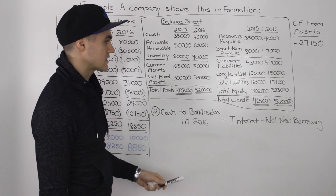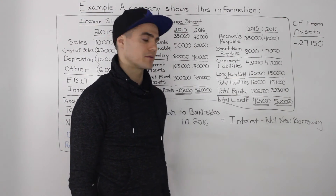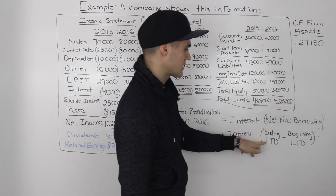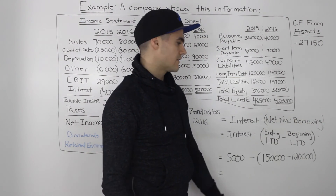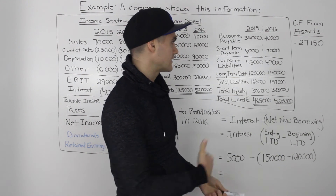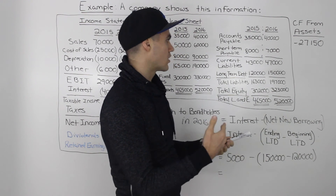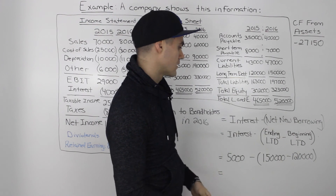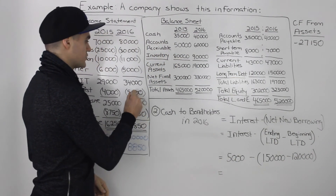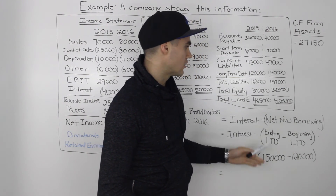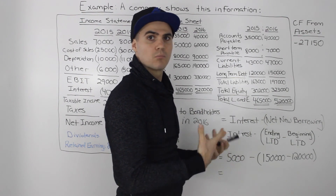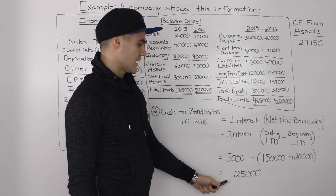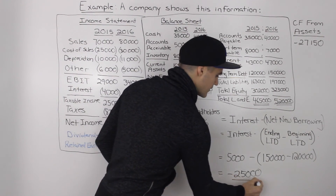Cash flow to bondholders in 2016 equals interest minus net new borrowing. Net new borrowing is basically the change in long-term debt — ending long-term debt minus beginning long-term debt. From the balance sheet, ending long-term debt in 2016 was $150,000, and beginning long-term debt — the 2015 ending figure — was $120,000. So interest was $5,000 from the 2016 income statement, and long-term debt went up by $30,000, meaning we borrowed $30,000 more from bondholders. That gives us $5,000 minus $30,000, for a final cash flow to bondholders of negative $25,000.